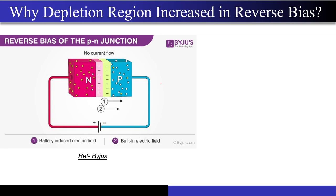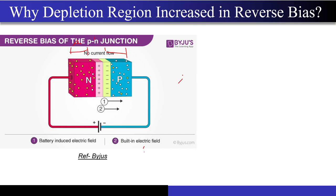Let me divide the PN junction into three sections: region A on the far left, region B corresponding to the depletion region, and region C on the far right. The first question is: does there exist any electric field in regions A and C even when a bias is applied?